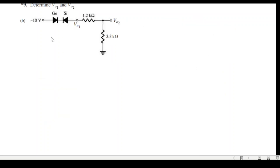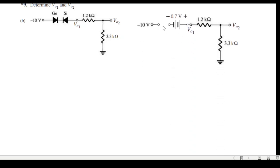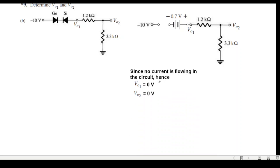For the negative supply case, the diodes are reverse biased — they become open circuits. Since no current is flowing in this circuit, V01 is zero volt and V02 is zero volt. Thank you for following this technique.